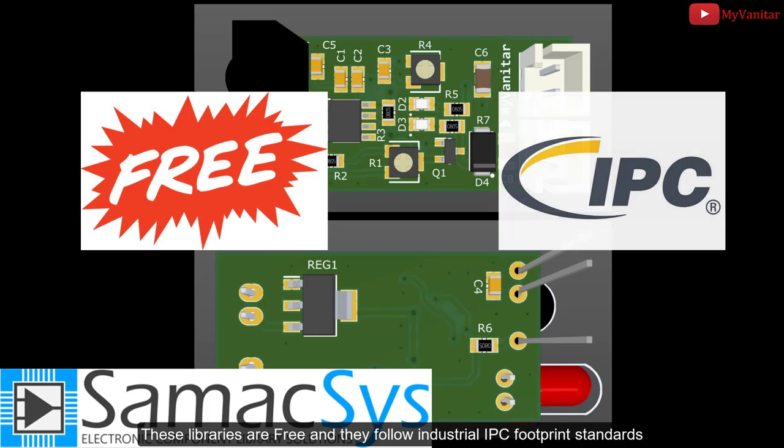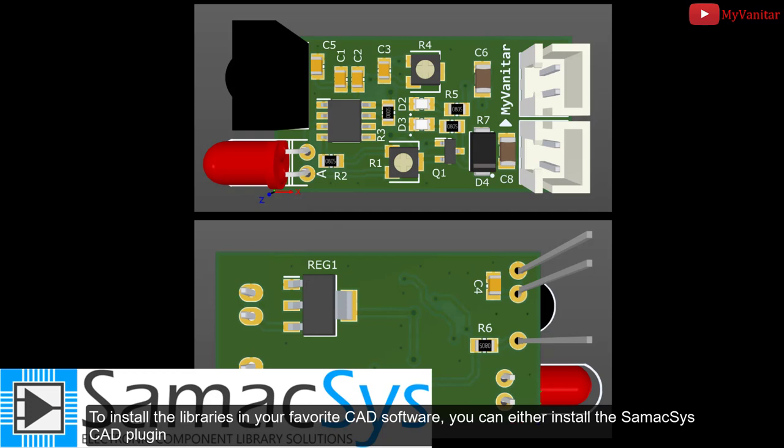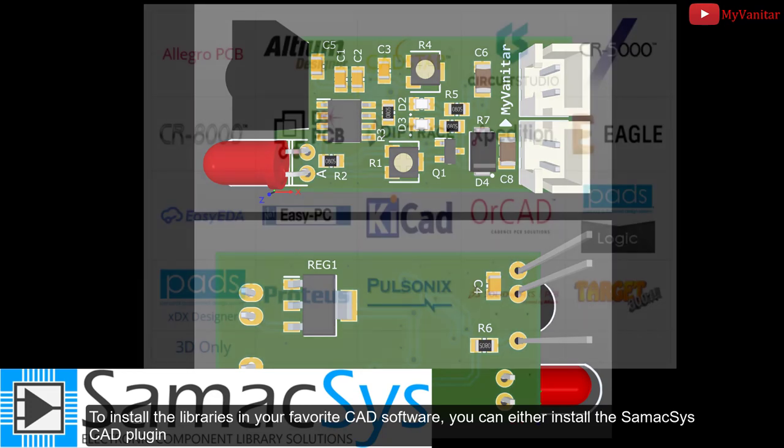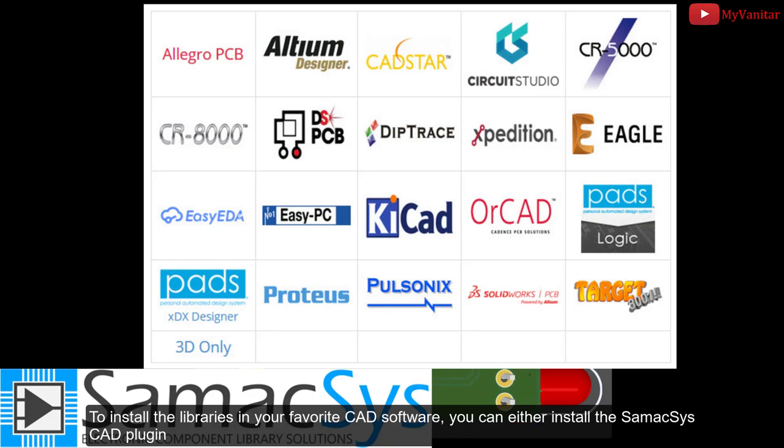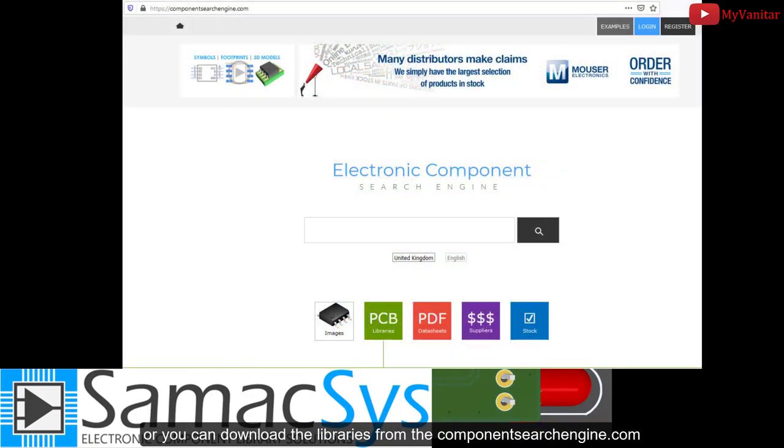These libraries are free and they follow industrial IPC footprint standards. To install the libraries in your favorite CAD software, you can either install the Simax CAD plugin or you can download the libraries from componentsearchengine.com. I use Altium Designer, so I prefer to use the Altium plugin.